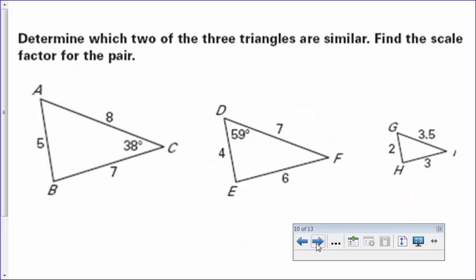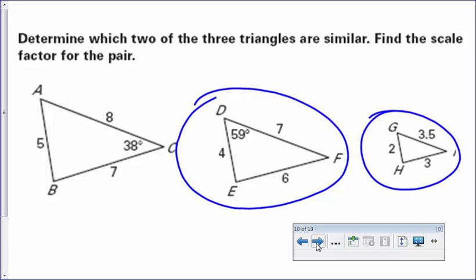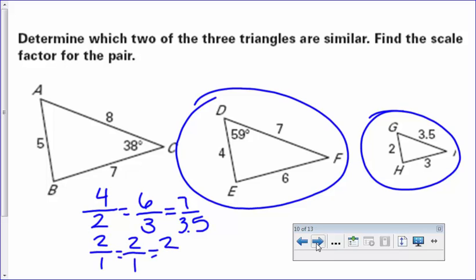All right, so this is an SOL style question. I would like you guys to pause it and see if you can determine which two out of the three are similar. So, circle them, and then it also wants you to find the scale factor. So, this would be one of those ones where you would select and click the two correct choices. All right, so hopefully you selected the second and third choice. They are similar, by side, side, side similarity, because you can set up the proportions. 4 over 2 should equal 6 over 3 should equal 7 over 3.5, and they all do simplify to 2 to 1. So they are similar, by SSS similarity, and then our scale factor is 2 to 1.